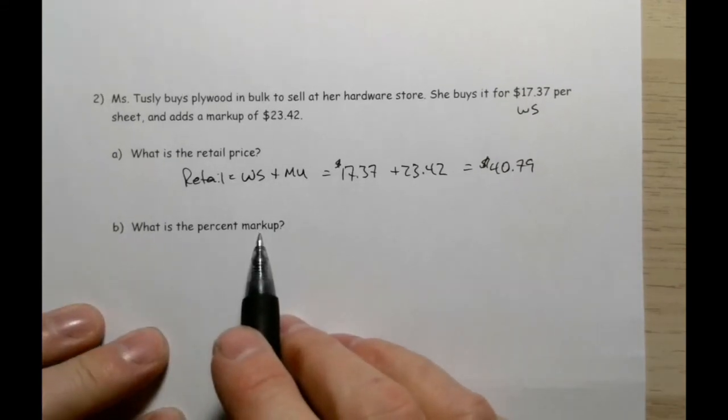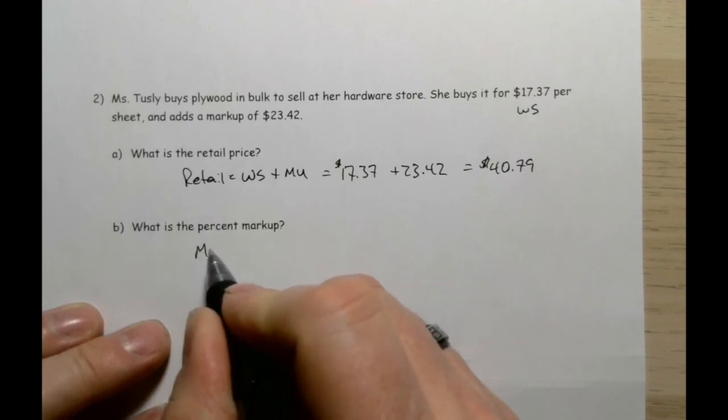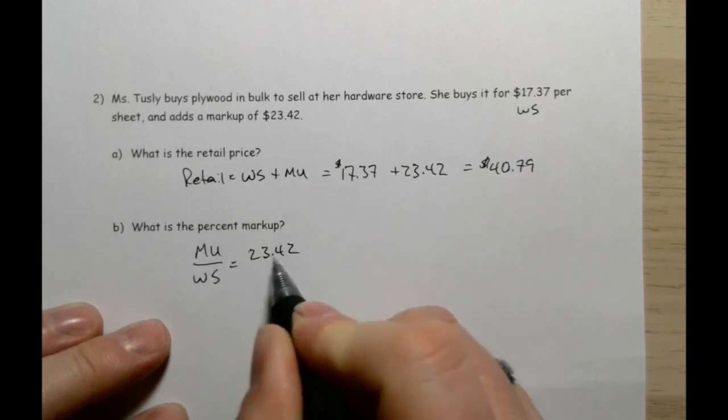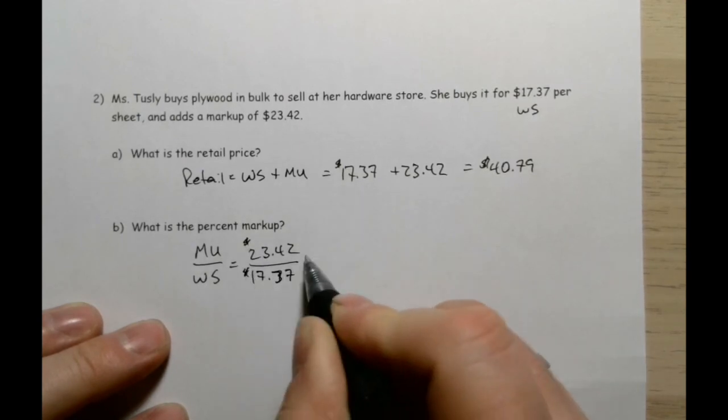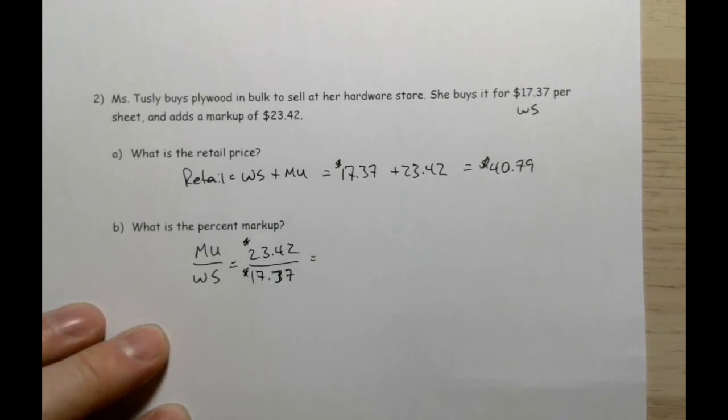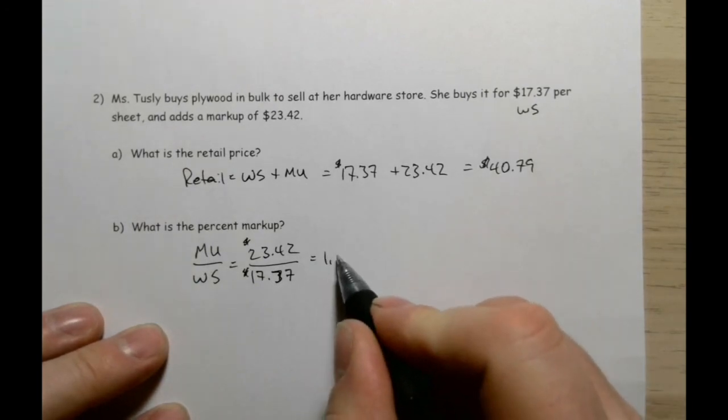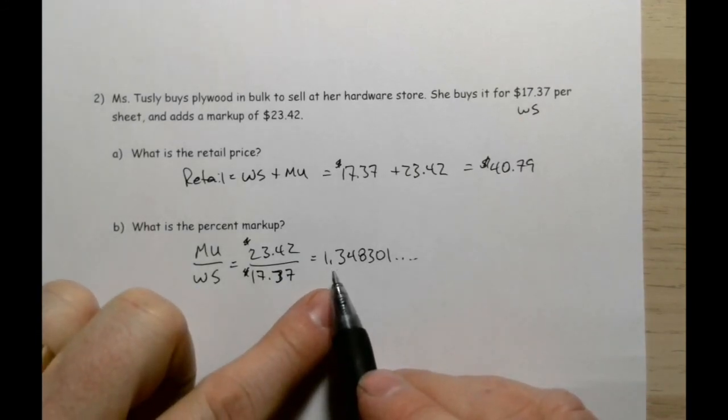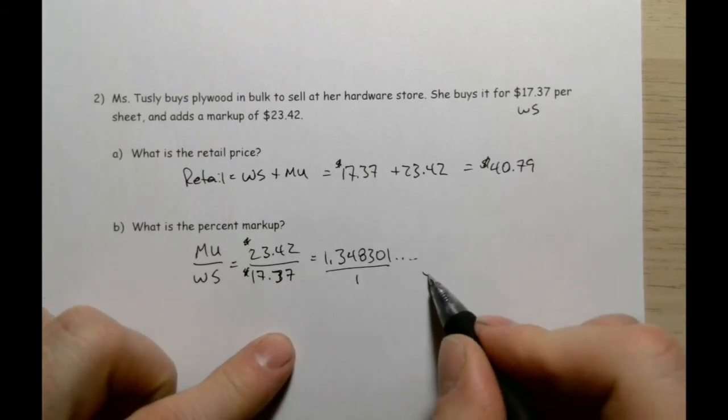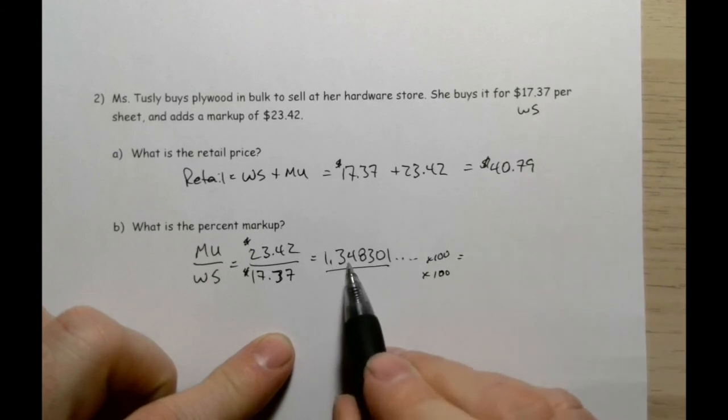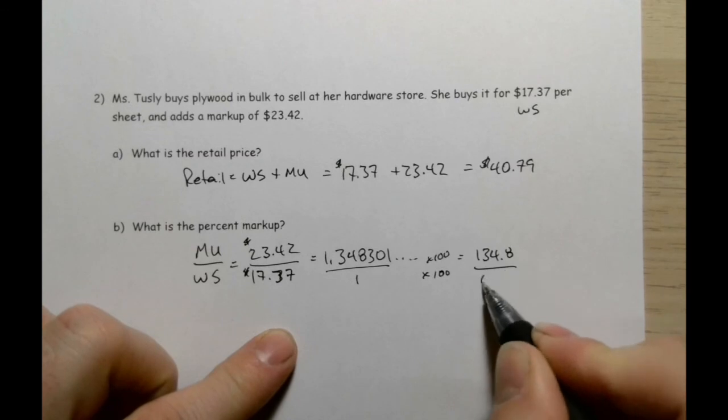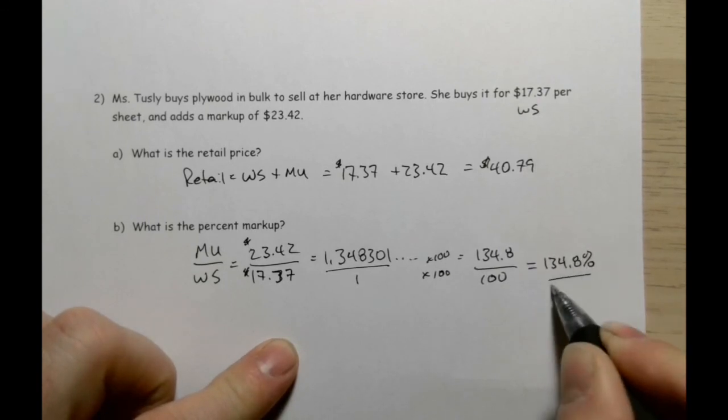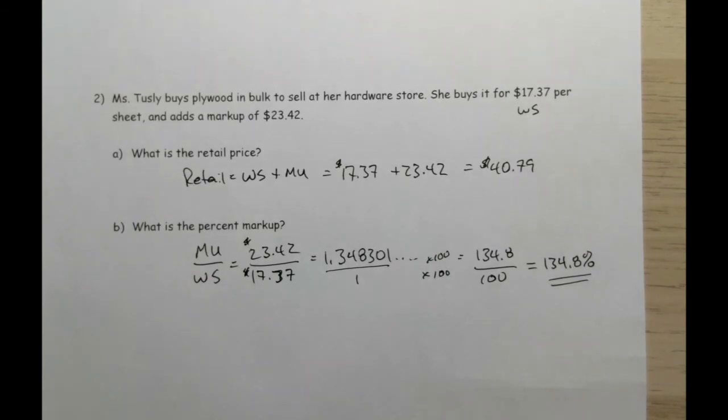Now, what's her percent markup? That's going to be your markup divided by your wholesale price. Our markup was $23.42, and our wholesale price was $17.37. So I'm going to go to my calculator here, $23.42 divided by $17.37. And I get 1.348301... Let's take this to the nearest tenth of a percent. This is over 1. I'm going to multiply numerator and denominator by 100, so I'm going to move that over two places: 134.8 over 100. When I write it as a percentage, I basically mean out of 100, so it's going to be 134.8%. That is the percent markup that she is using to sell her plywood.